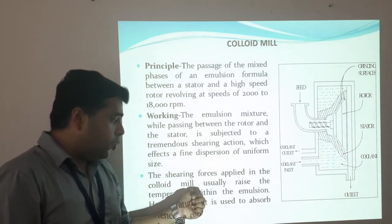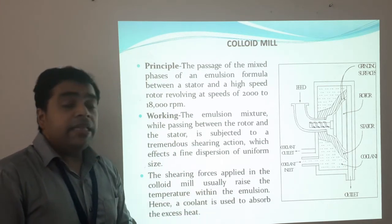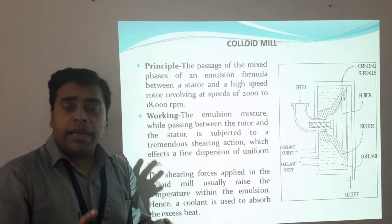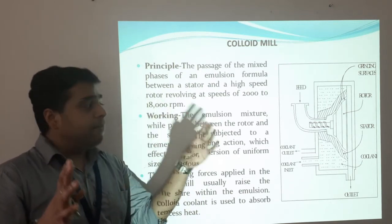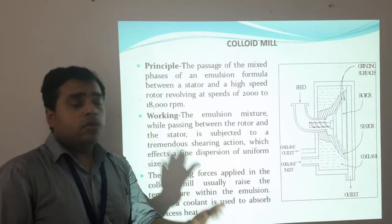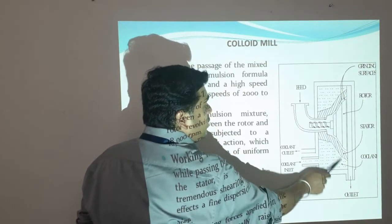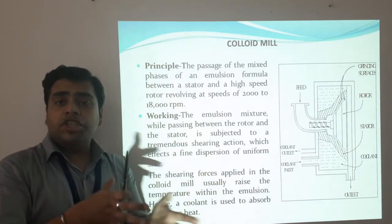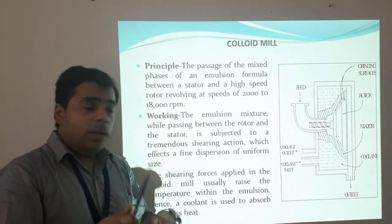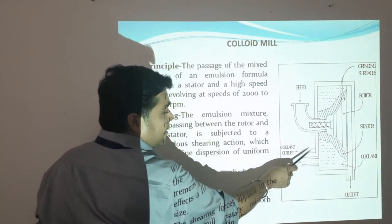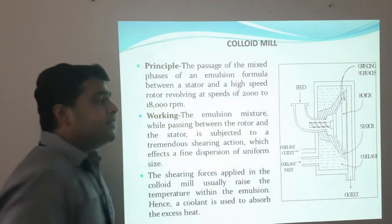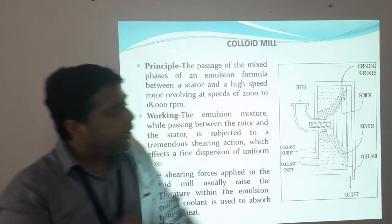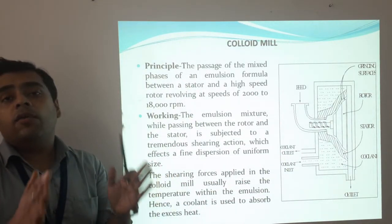The shearing forces applied in the colloid mill usually raise the temperature within the emulsion. Therefore, a coolant is used to absorb the heat and prevent decomposition of solids due to heating. A coolant liquid is entered from the coolant inlet on both sides of the mill and exits via the coolant outlet. The stator position, rotor position, and the development of shearing action between them constitute the main working principle of the colloid mill.